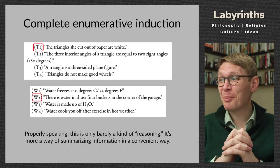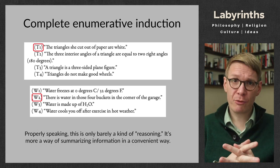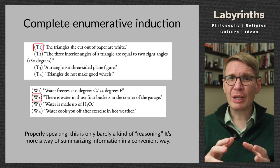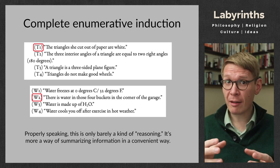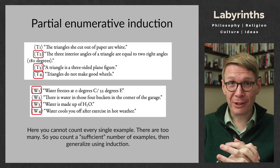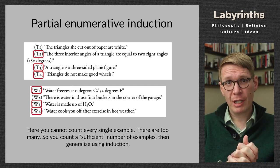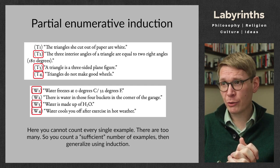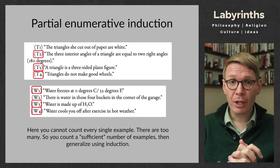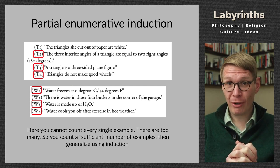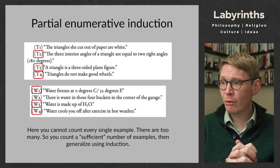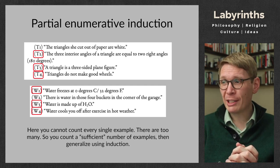Properly speaking, complete enumerative induction is only barely a kind of reasoning — it's more a way of summarizing information conveniently. We're dealing with small numbers of things and not really drawing conclusions, just making a statement justified by the evidence. Far more common, and the basis of all the natural and social sciences, is partial enumerative induction. Here you can't count all examples because you're dealing with infinite, uncountable instances of a phenomenon, so you count a sufficient number and then generalize.